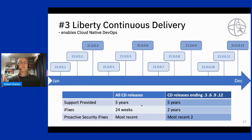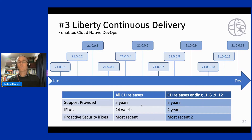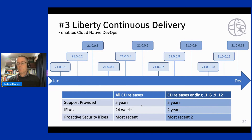What Liberty does is use a continuous delivery model where we release Liberty every four weeks. For all releases, you get five years of support and 24 weeks of iFix support for the four-weekly releases, plus proactive security fixes for the most recent release. There are also special quarterly releases — the .3, .6, .9, and .12 releases — that get increased iFix support for two years and also get proactive security fixes for the most recent.